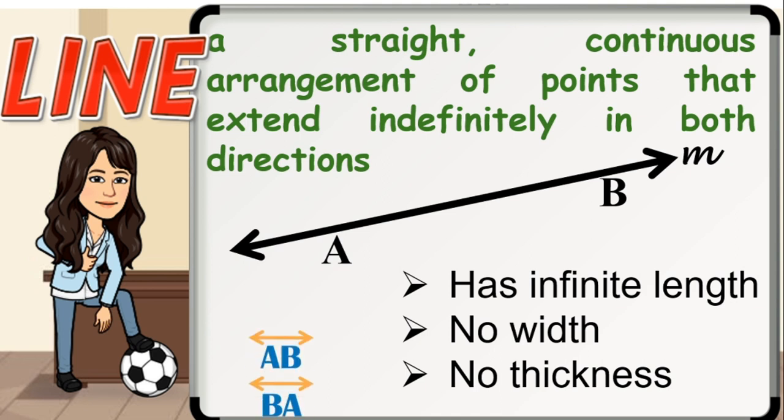A line is named by a single lowercase script letter. In this figure, we may name it as line M, or by at least any two points on the line. So this figure may also be named as line AB or line BA. A line symbol may also be placed above the letters. The edge of a ruler can be used as a representation of a line.